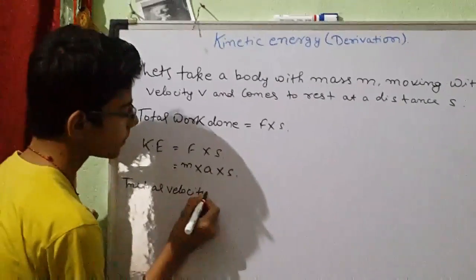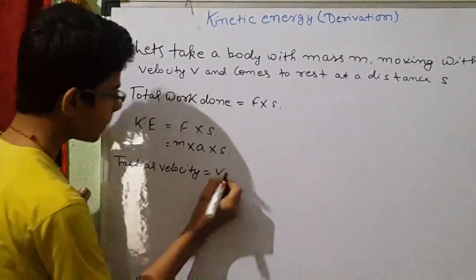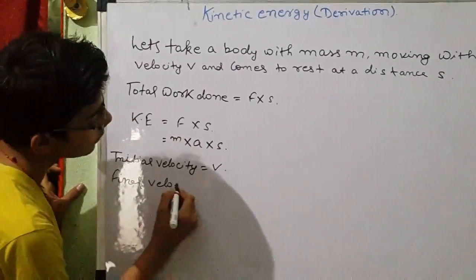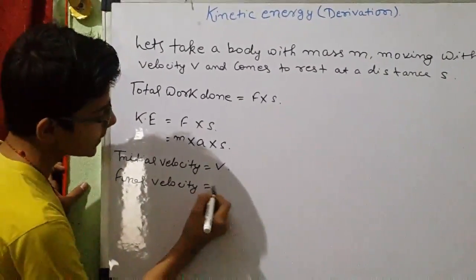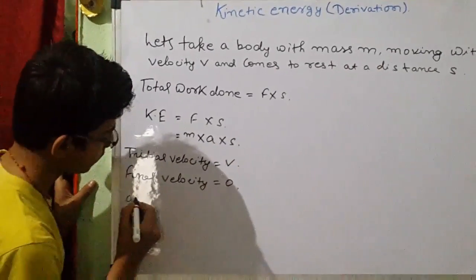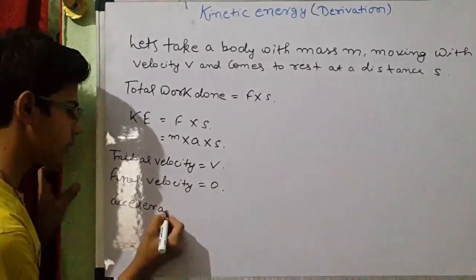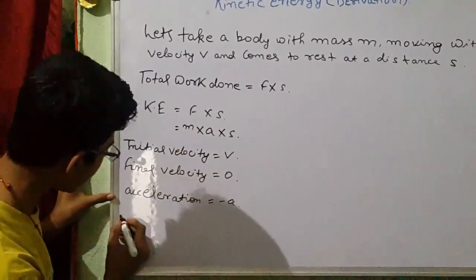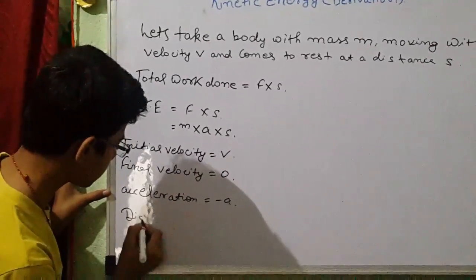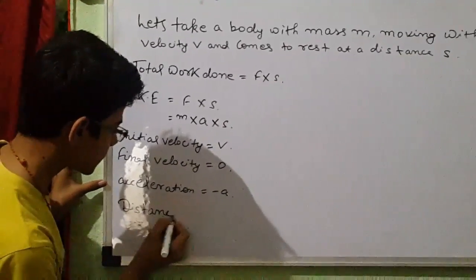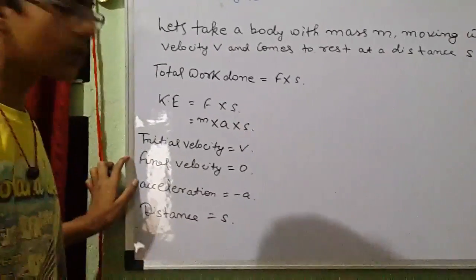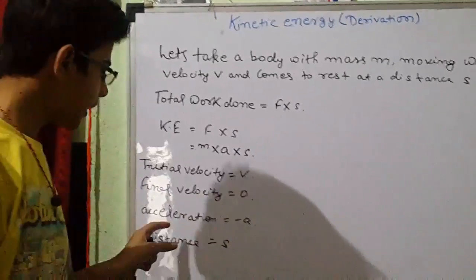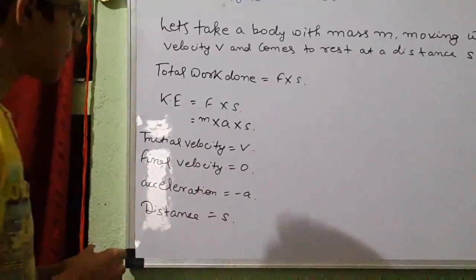So what do we have? We have initial velocity equal to v, final velocity is equal to zero, acceleration is minus a, and the distance is equal to s. We have these four things.